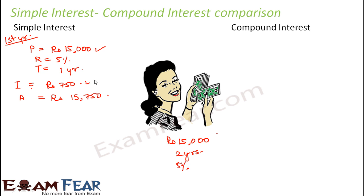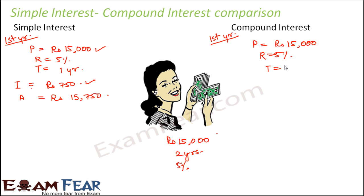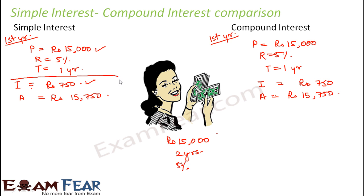Now what happens in the case of compound interest? In the first year, the principal remains the same, the rate of interest is also the same, and the time period is also one year. So in this case also, the interest is rupees 750 and the amount at the end of the first year is rupees 15,750 — it is the same.